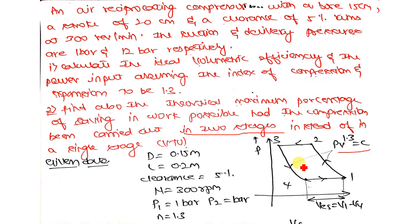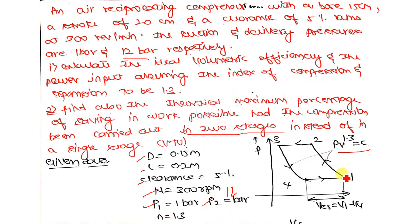First, draw the PV diagram — for every problem in applied thermodynamics which carries marks, write the PV diagram. Then write down the given data: d = 0.15 m, clearance ratio = 5%, n = 300 RPM, p1 = 1 bar, p2 = 12 bar, and the polytropic index n = 1.3 for both compression and expansion.